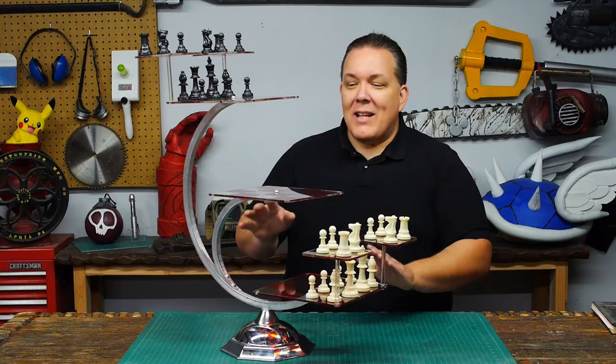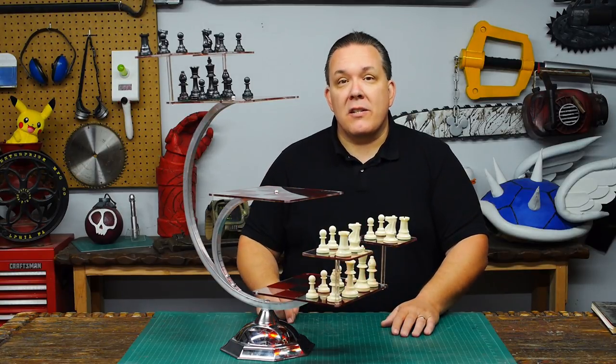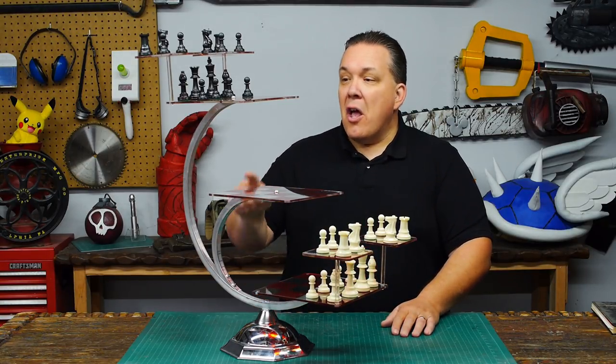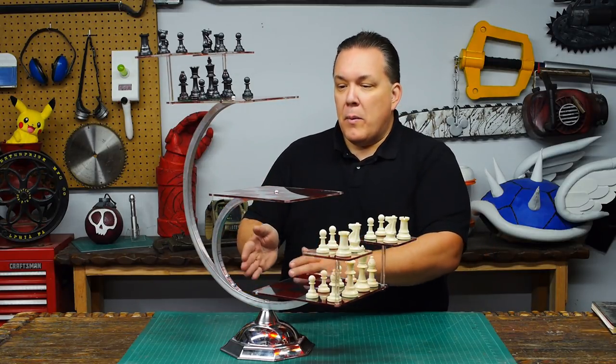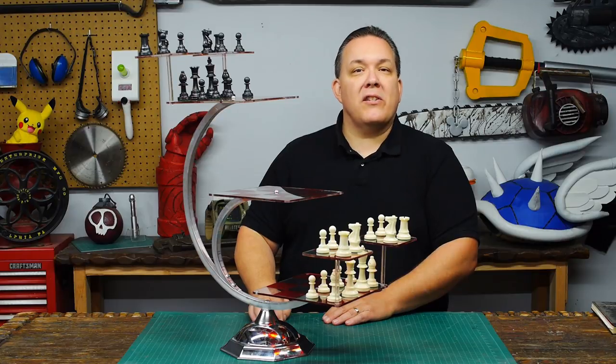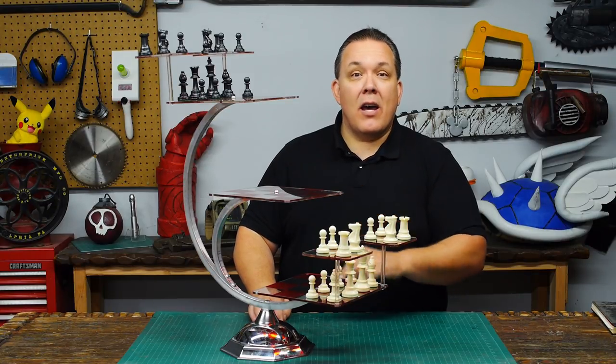And there are lots of different ways that you can make tridimensional chess. In fact, Star Trek The Next Generation made one completely out of clear acrylic, but I like the aluminum and acrylic look of the original series. And this is how Odin makes.